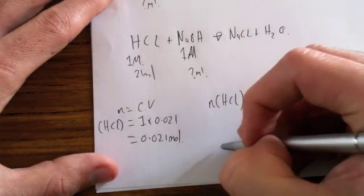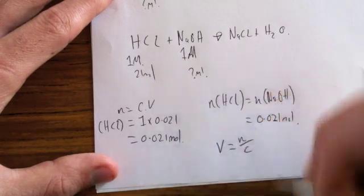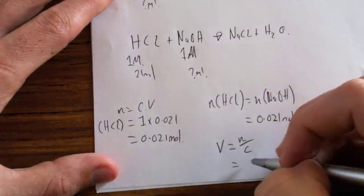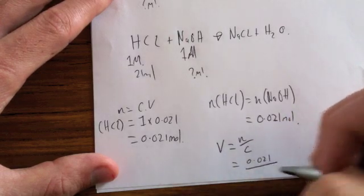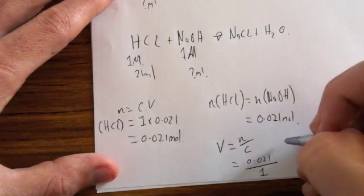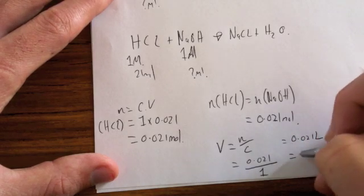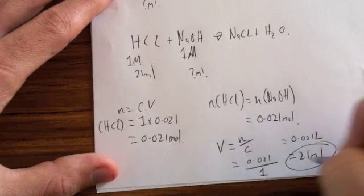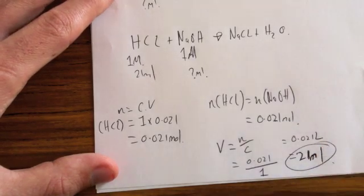The volume will be equal to number of moles over concentration, which will be 0.021 over our concentration, which is 1, which equals 0.021 litres, which equals 21 mL. So that's how much is left over. Fair enough.